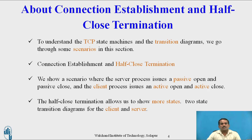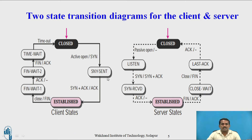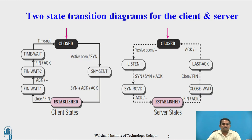The half-close termination allows us to show more states in the two-state transition diagram for client and server. In the first diagram we discussed the overall state transition diagram. Now, in this one, we will discuss only client states and server states separately. Initially, both client and server are in the closed state, and then they can start.